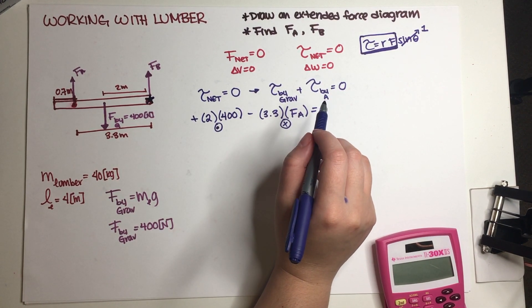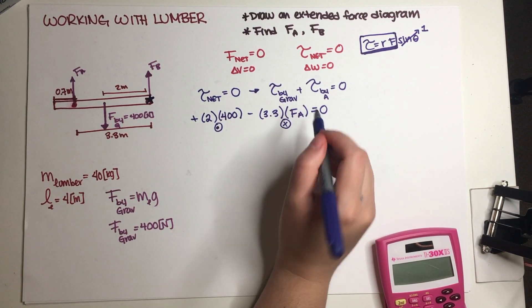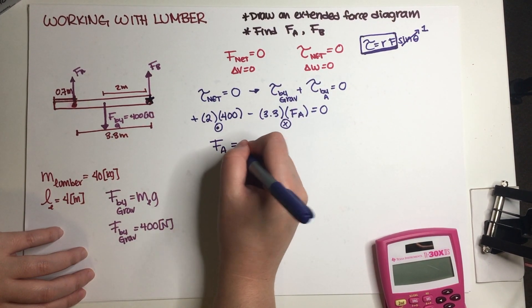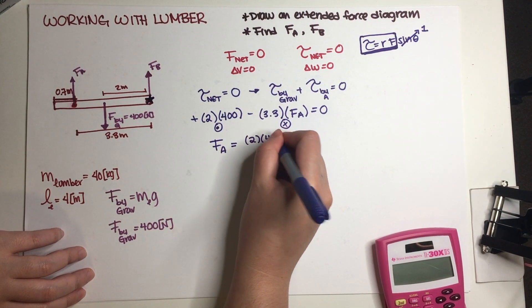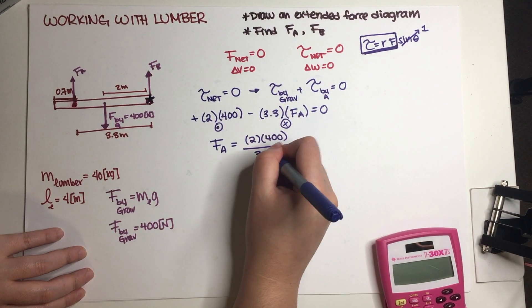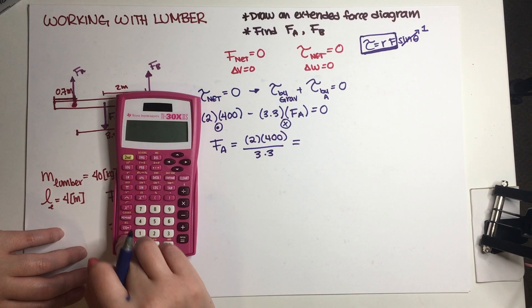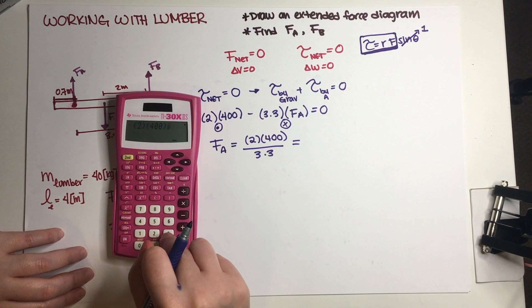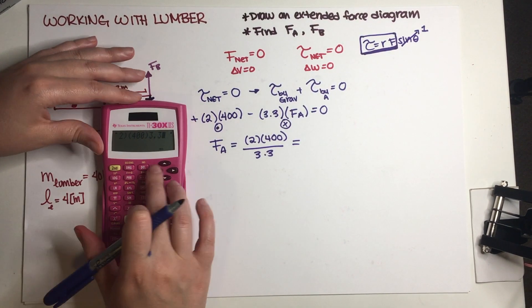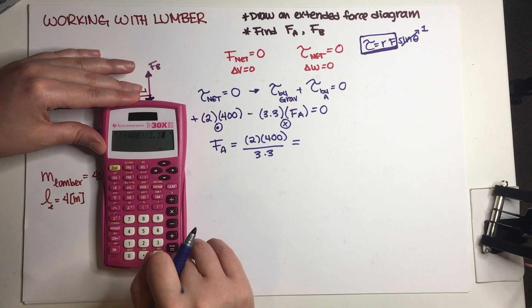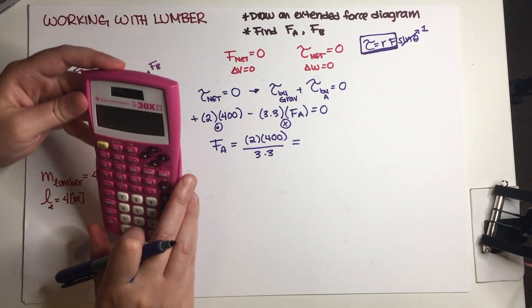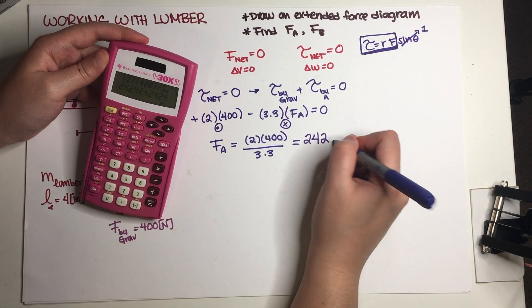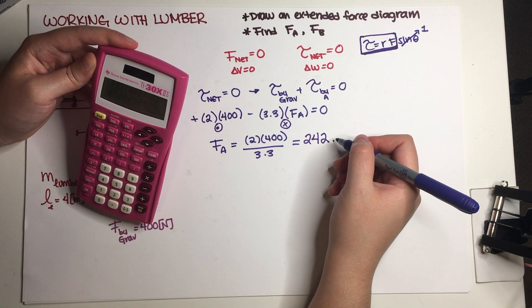All right, so now that that is figured out, we are just going to solve for force of A. So F_A is equal to 2 times 400 divided by 3.3, and that means that this force is 2·400 divided by 3.3, and that is going to be equal to 242.42 newtons.